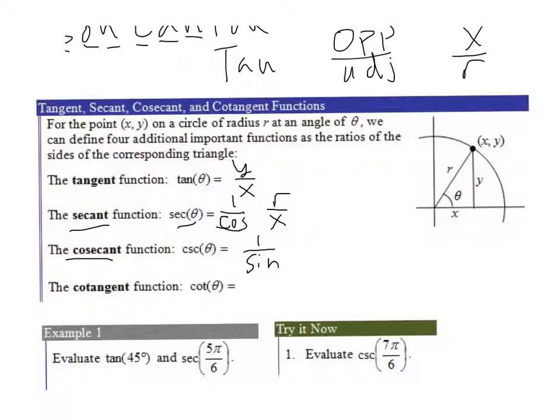So to come back to this, the cosecant is the same as the radius over the y coordinate. So it would be this side over this side.